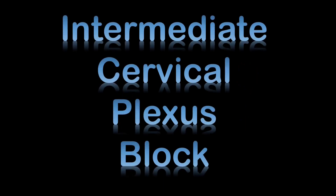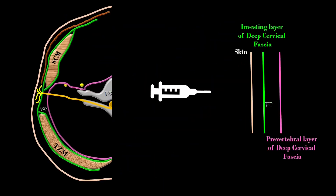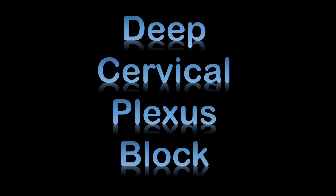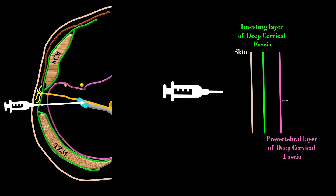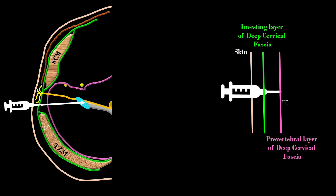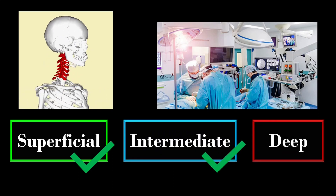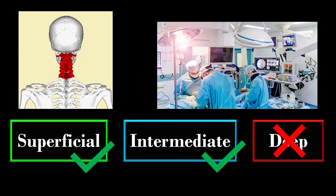In the intermediate cervical plexus block, the injection is performed under the investing layer of deep cervical fascia of the neck. A click or pop can be felt when the needle pierces this fascia. The deep cervical plexus block is the deepest injection and involves deposition of local anesthetic beneath the prevertebral fascia. Most surgeries can be accomplished with either the superficial or intermediate block without going into the complexity of the deep block and its associated complications.